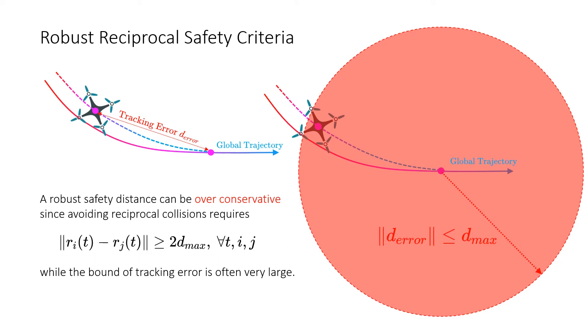As for tracking error, a safety distance is often added to reciprocal avoidance such that no collision occurs between vehicles. However, due to tracking error, safety distances have to be large enough to produce robust results, which are quite conservative.